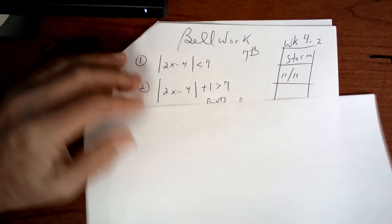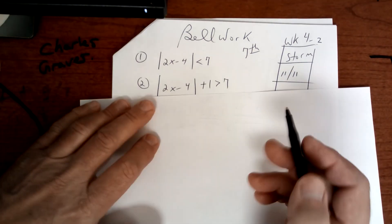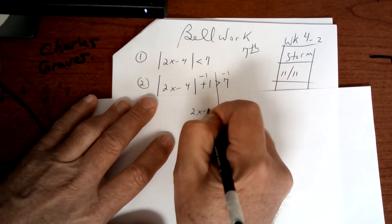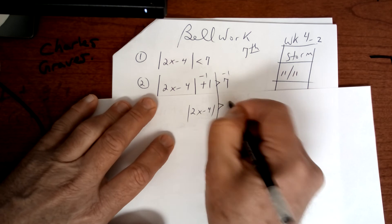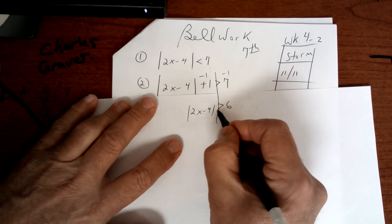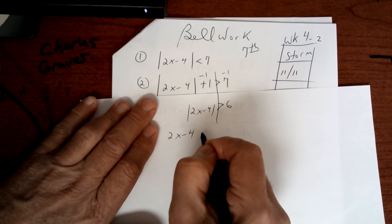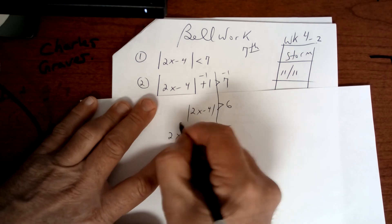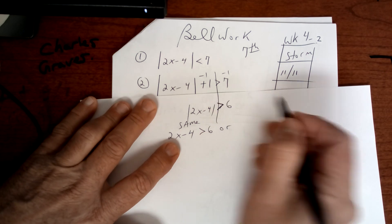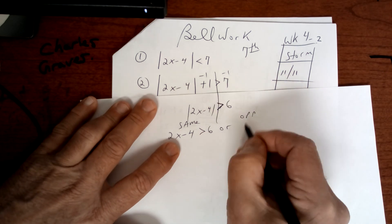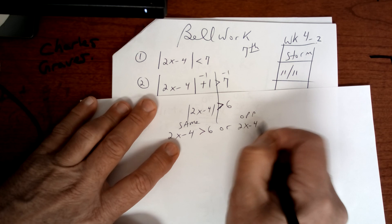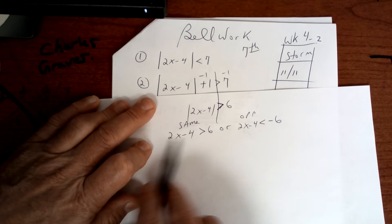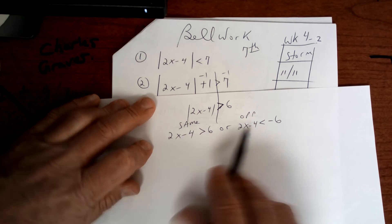Number 2 is pointing away, but you've got to get the absolute value by itself. So you want to subtract 1 from both sides and you get 6. Now since it points away, it's going to be the same thing and then it's going to be or the opposite. Same. See how it points away? And then opposite. The opposite is going to be 2x minus 4 is less than the negative 6. And then you've got to work those out. You're going to add and then divide. Add and then divide.